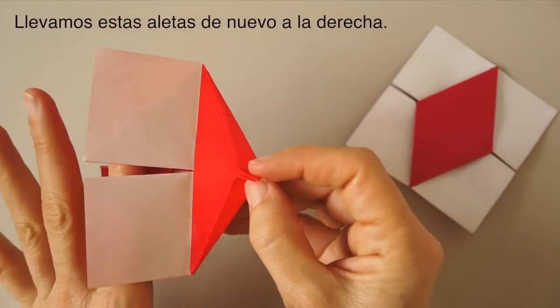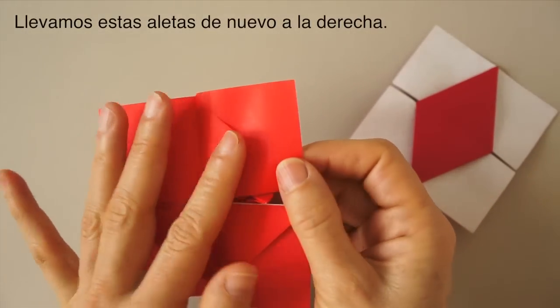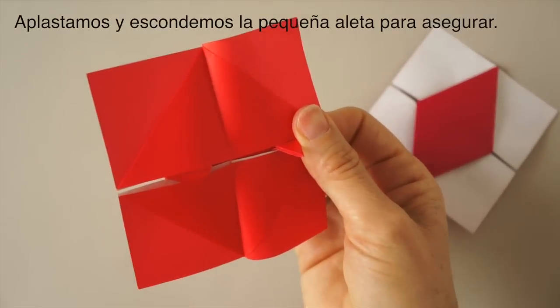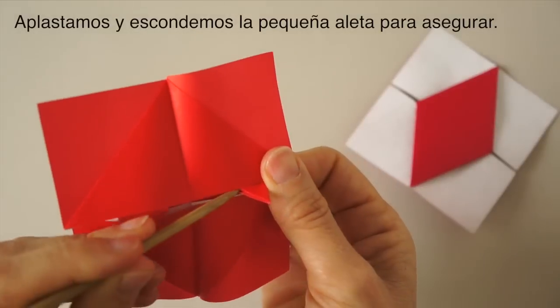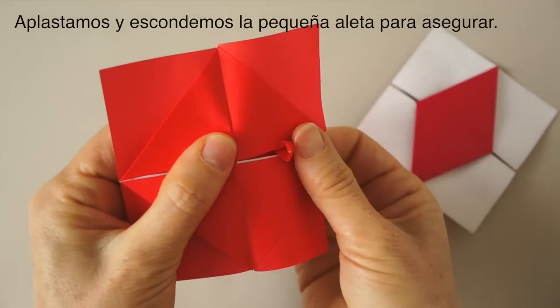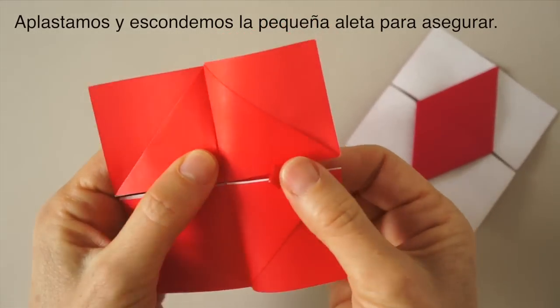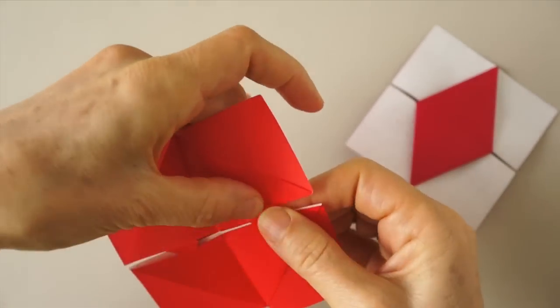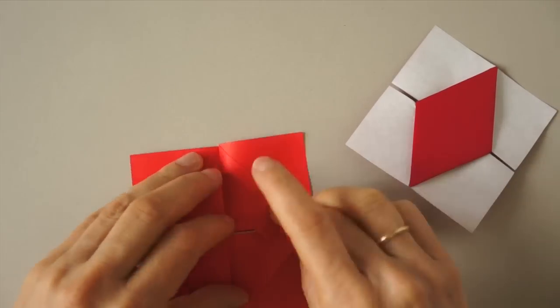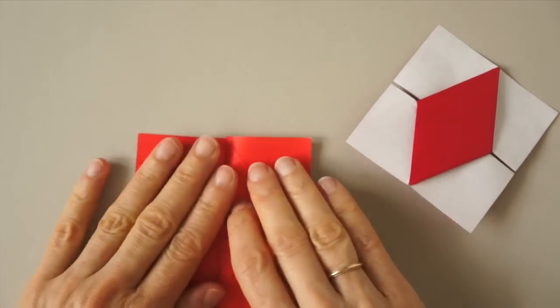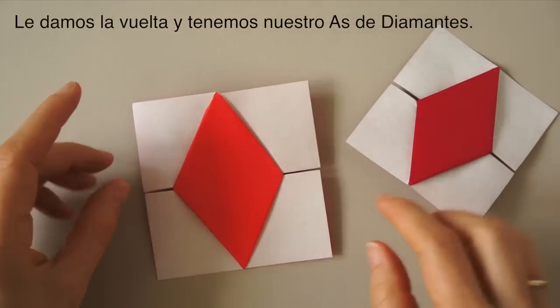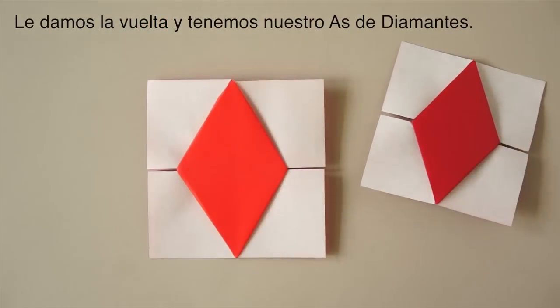We bring the flaps back over. We turn it over and we have our Ace of Diamonds.